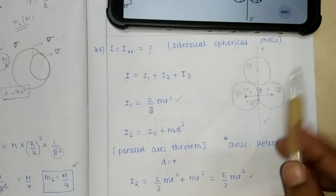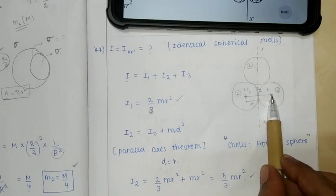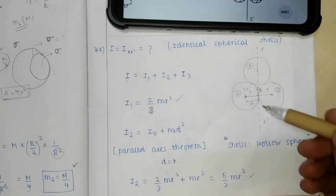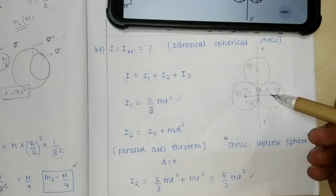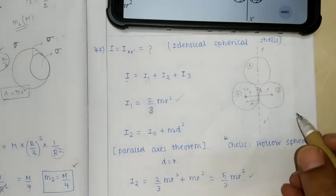I3: The axis is at distance r from the center of mass. For this identical shell, using the same calculation, I3 equals 5/3 mr².